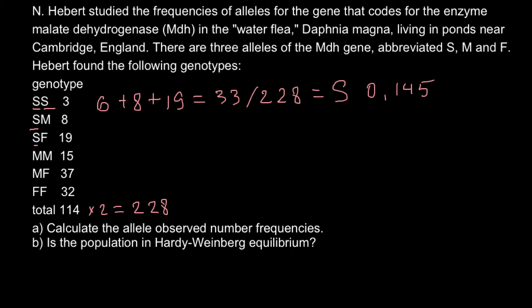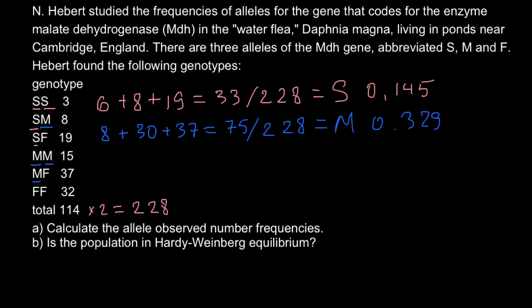That's why we divide 33 by 228, and the frequency of the S allele would be 0.145. Now we can find the frequency of the M allele. We have eight individuals with genotype SM, so eight M alleles present there. We also have genotype MM with 15 individuals, giving 30 alleles in that genotype. We also have 37 in another genotype, and the total number of M alleles would be 75. Dividing by 228, the frequency of the M allele is 0.329.